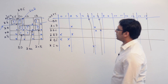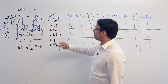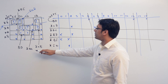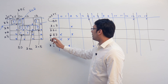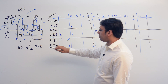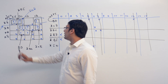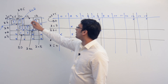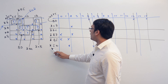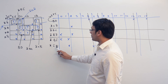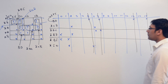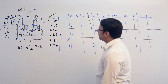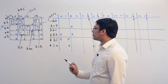Now look at the other prime implicants: we have A'CD', A'BC, A'B'D', A'B'C', and A'C'D'.